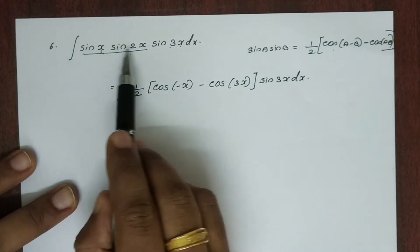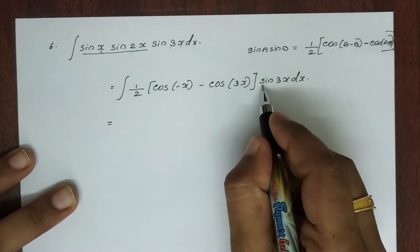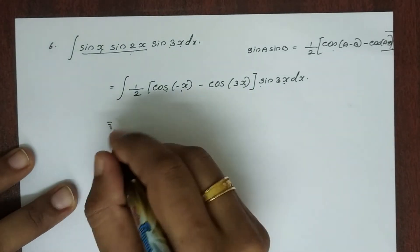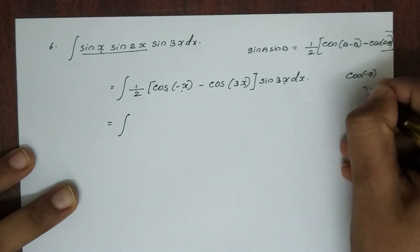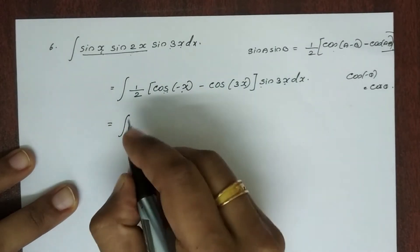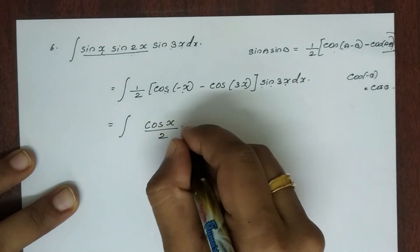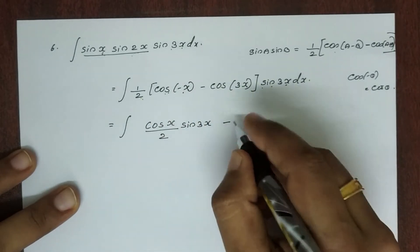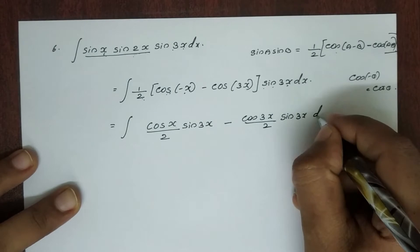Now sin x · sin 2x is expanded, and we multiply by sin 3x. We apply cos A sin B = ½[sin(A+B) − sin(A−B)]. Since cos(−x) = cos x, we have (1/2) into [cos x − cos 3x] into sin 3x. This becomes (1/2)[cos x · sin 3x minus cos 3x · sin 3x].